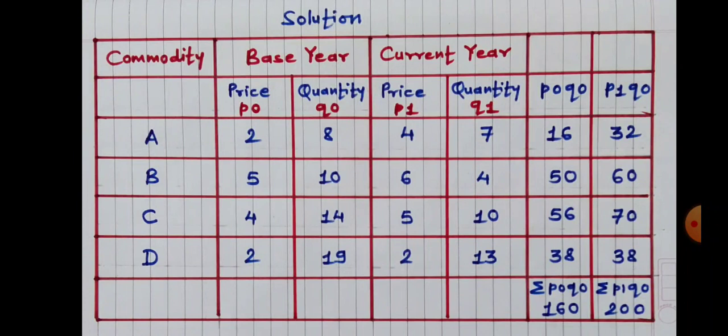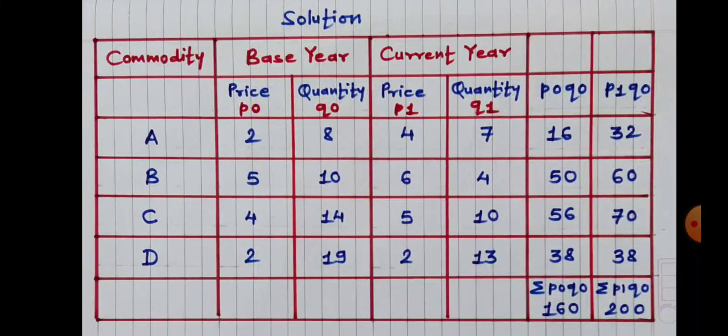Base year prices are denoted by P0 and base year quantities are denoted by Q0. Prices in the current year are denoted by P1 and quantities in the current year are denoted by Q1. First step: find out P0Q0, i.e. P0 multiplied by Q0. 2 into 8 equals 16; 5 into 10 equals 50; 4 into 14 equals 56; 2 into 19 equals 38. So we have our P0Q0 values.